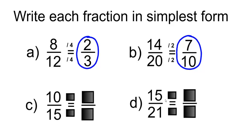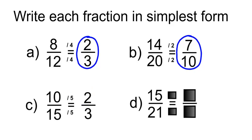For 10 over 15, the greatest common factor is going to be 5. 15 divided by 5 is 3, and 10 divided by 5 is 2. So 2 over 3 is equivalent to 10 over 15.